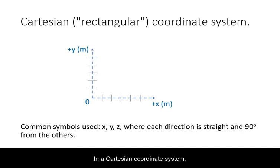In a Cartesian coordinate system, a quantity is represented as a magnitude in each of two reference directions.